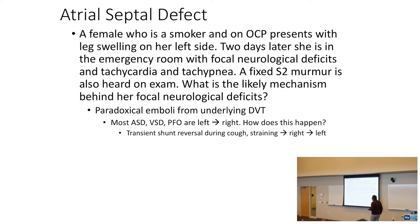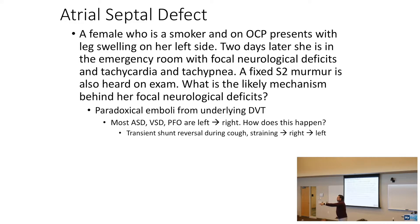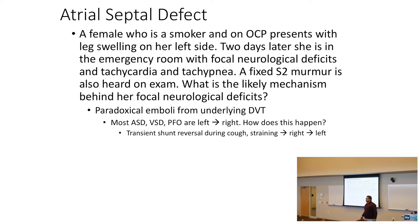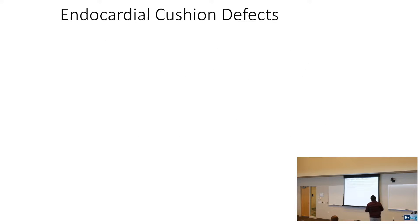Most ASDs and PFOs are left to right — because the systemic circulation is a little bit stronger than the right side of the heart. That's why the clot couldn't move through normally.